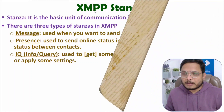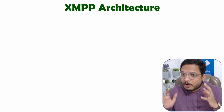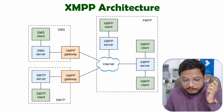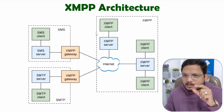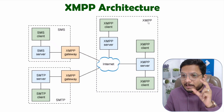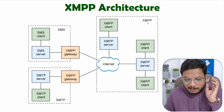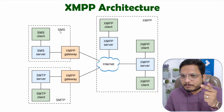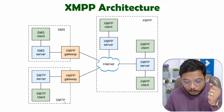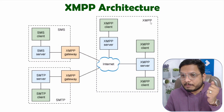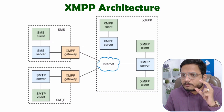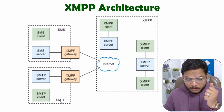Now let's look at the architecture of XMPP protocol. This architecture is taken from the IBM website. One key thing to understand is that XMPP can be interconnected with a variety of protocols — for example, SMS (Short Message Service) and SMTP (Simple Mail Transfer Protocol), which is used for email transfer.